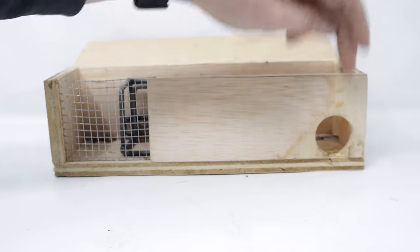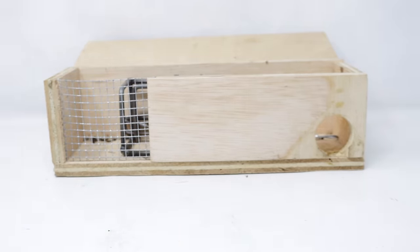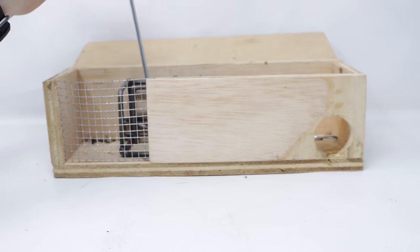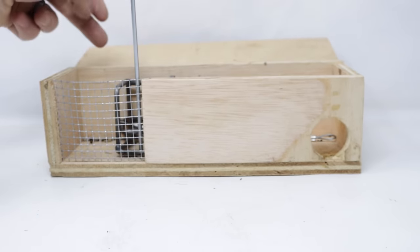I'll place it in our box. The mouse will enter, try to get the bait, and when it does, it will push down that latch, and we'll see it go off. Let's go set up the motion cameras and see what happens.